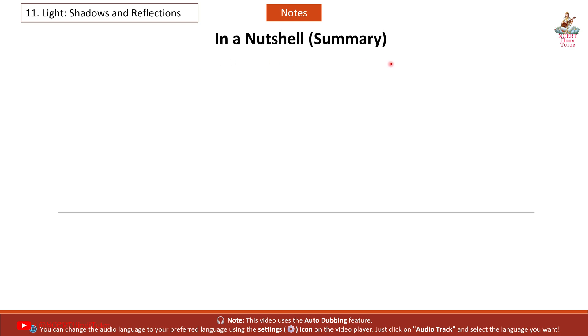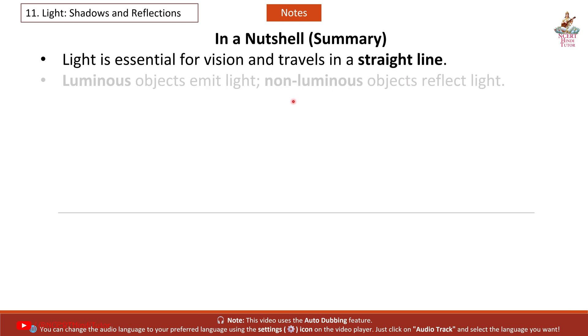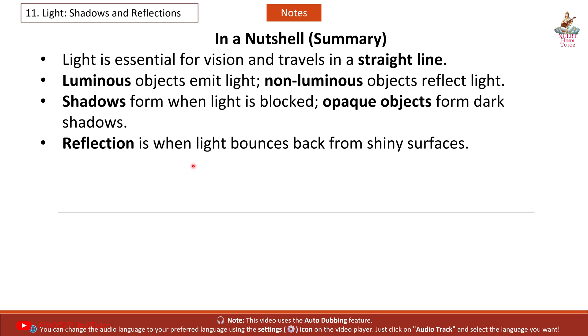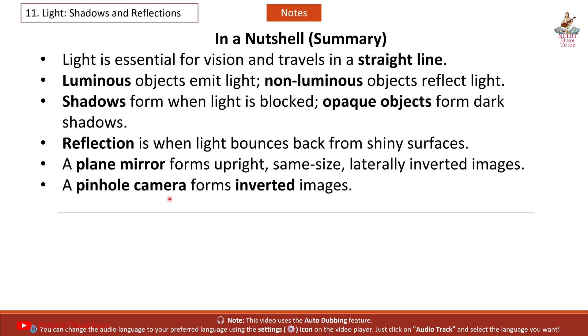In a nutshell, summary: Light is essential for vision and travels in a straight line. Luminous objects emit light, non-luminous objects reflect light. Shadows form when light is blocked. Opaque objects form dark shadows. Reflection is when light bounces back from shiny surfaces. A plane mirror forms upright, same size, laterally inverted images. A pinhole camera forms inverted images. Periscope and kaleidoscope are creative applications of light and mirrors.